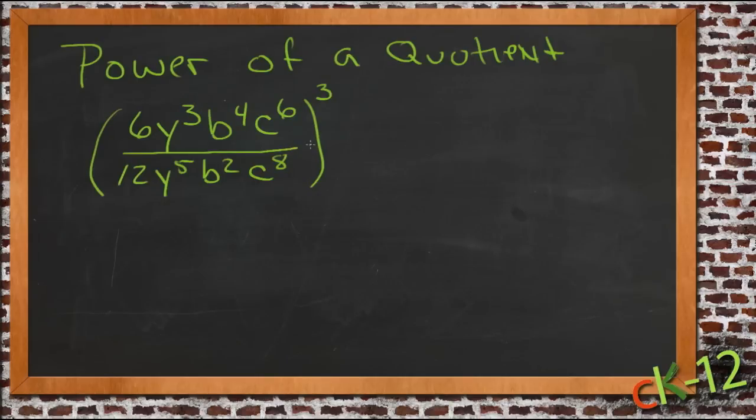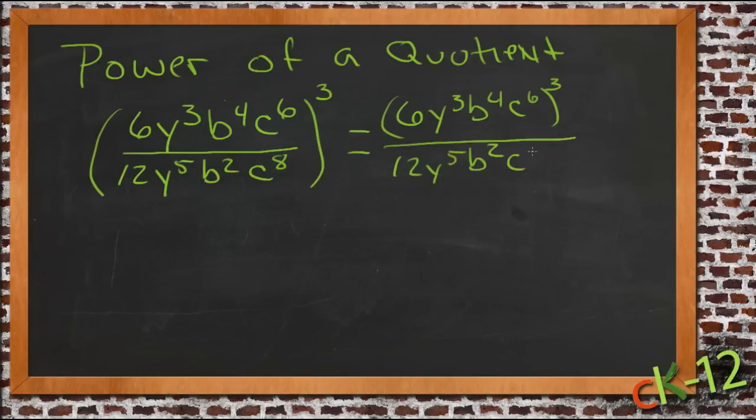So there's really two ways to do this. We could rewrite this so that we had just the numerator to the power of 3 and then the denominator to the power of 3. So it would look like 6y cubed b to the 4th c to the 6th cubed over 12y to the 5th b squared c to the 8th cubed.